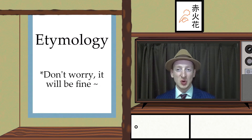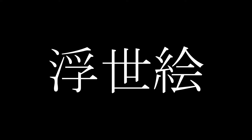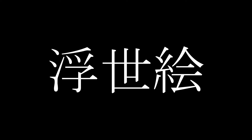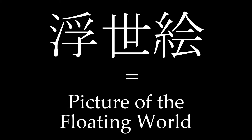Let's talk about the etymology of Ukiyo-e, which is full of poetry. In Japanese, the word Ukiyo-e is written like this. As you can see, this word is composed of three characters — three kanji. The first kanji is 'uki', which means floating. The second kanji is 'yo', which means world. The third kanji is 'e', which means picture. When we translate this Japanese word into English, it means 'picture of the floating world'.